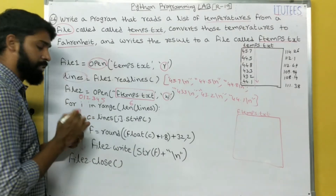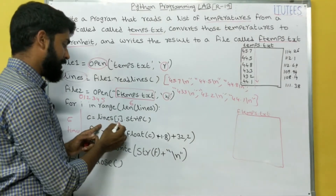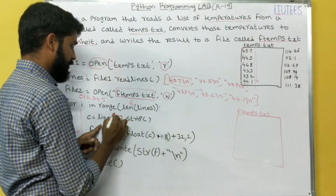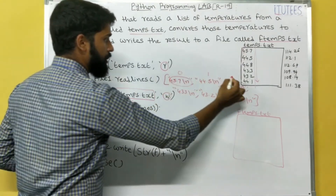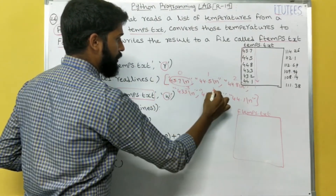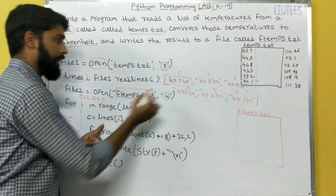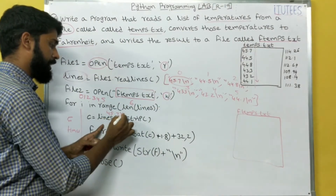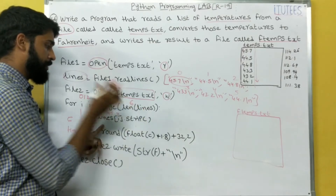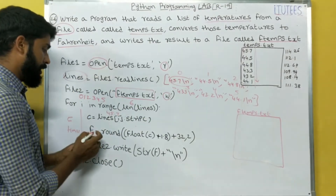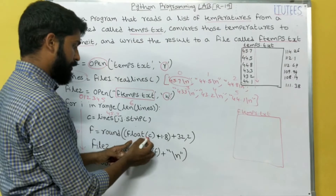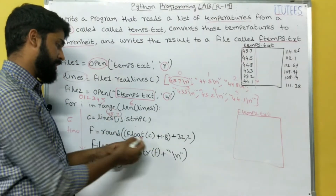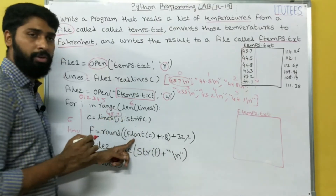In the first iteration, C = lines[i].strip(). lines[0] gives '45.7\n', and strip() removes the whitespace and newline character. Then f = float(C) converts the string '45.7' into the float value 45.7.